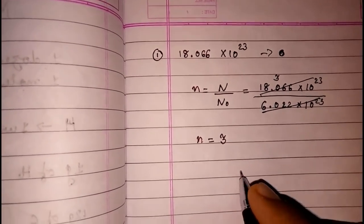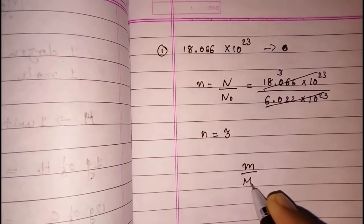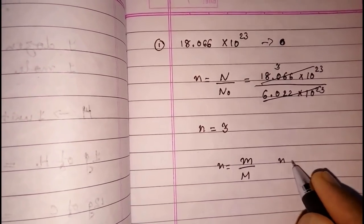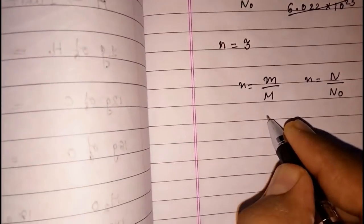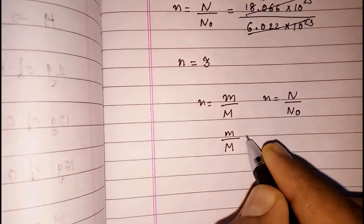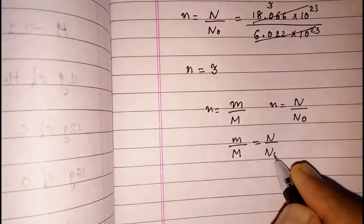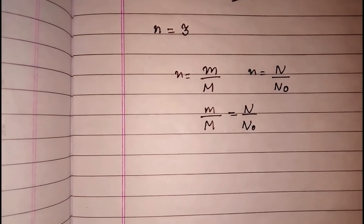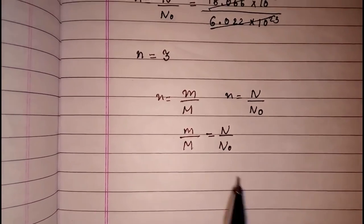By combining these two formulas, we also get a new relationship: m / M = N / N₀. So we have n = m / M and also n = N / N₀, and combining gives m / M = N / N₀.